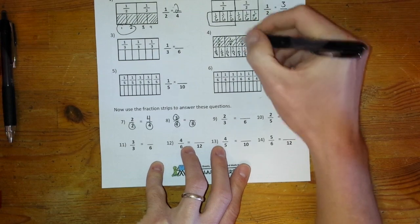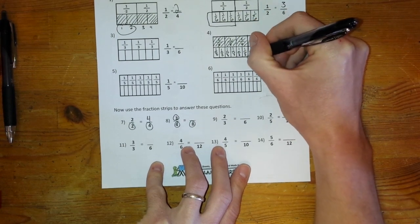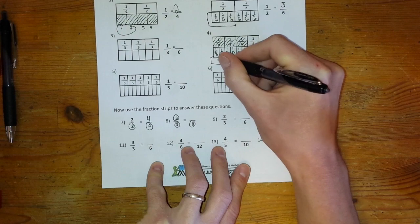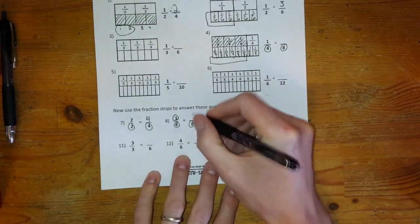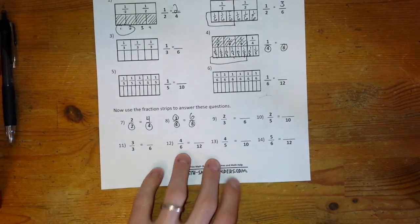Well, if I have three fourths, I know that I have this many here. So I have one, two, three, four, five, six eighths, and so on.